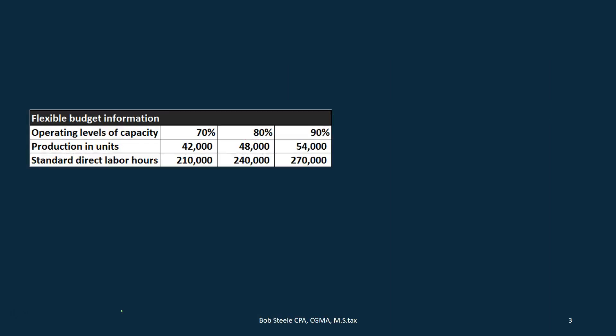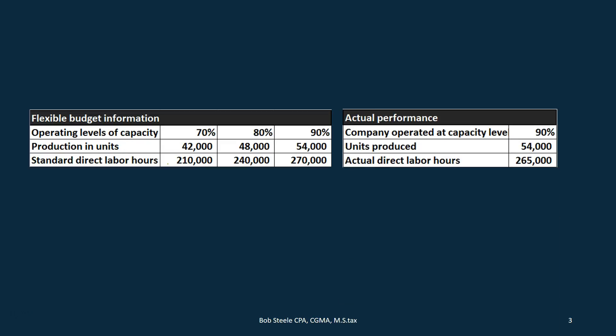When we think about variance analysis, we have to consider that we are going to be talking about a flexible budget. For example, if we had planned the budget at 70 percent capacity with production of 42,000 units and 210,000 hours, we would need to change that if we actually ran the process and produced at 90 percent capacity — 54,000 units with actual labor being 265,000 hours. We will always have some different level of production than projected.